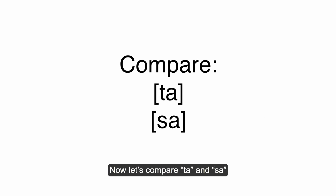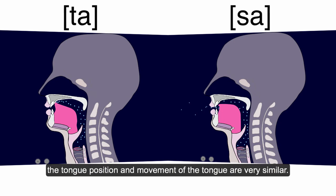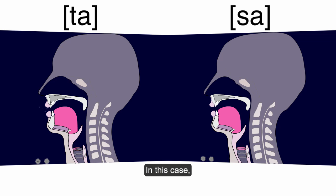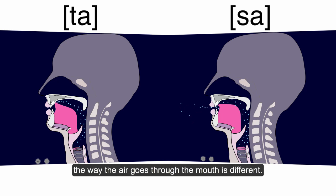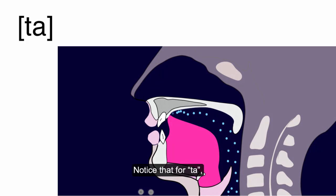Now let's compare ta and sa. For ta and sa, the tongue position and movement are very similar. What do you think is the difference? In this case, the way the air goes through the mouth is different. Notice that for ta, the tongue touches the alveolar ridge.